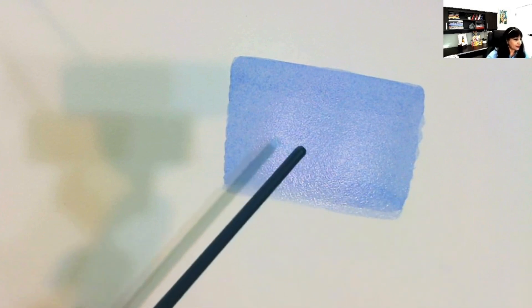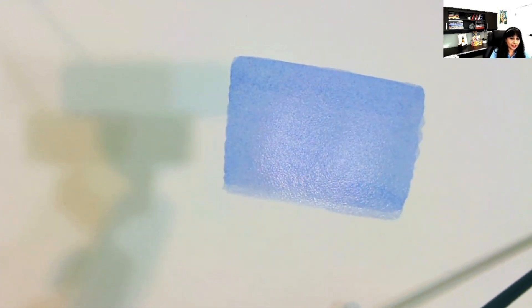So now I have applied the second layer. Now can you see that it is looking much more uniform as compared to the first layer of paint? So I hope you have understood how to apply the second layer of paint with a flat wash.